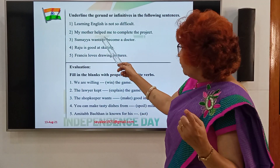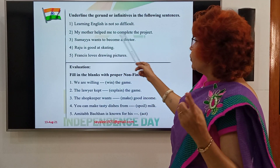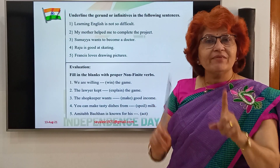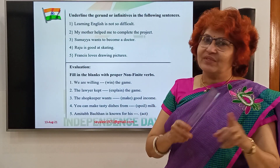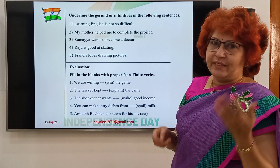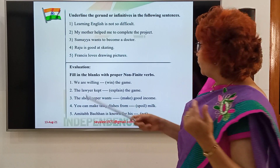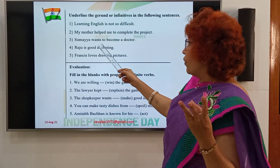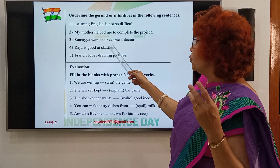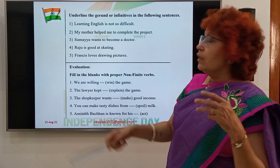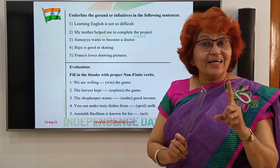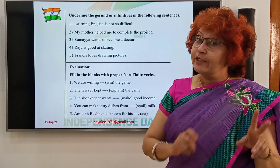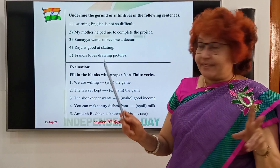See the second sentence: My mother helped me to complete the project. Here 'to' is present and it is of course an infinitive. See the third sentence: Sumayya wants to become a doctor. 'To become' appears again — it relates to the main verb. It is an infinitive again, so underline it.